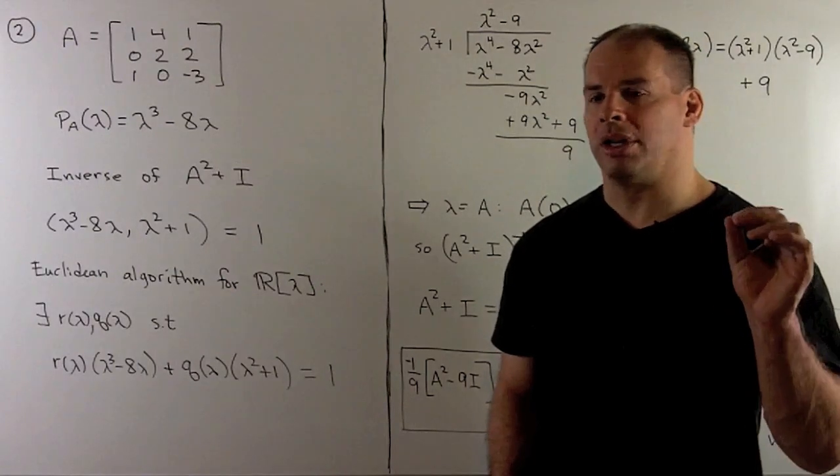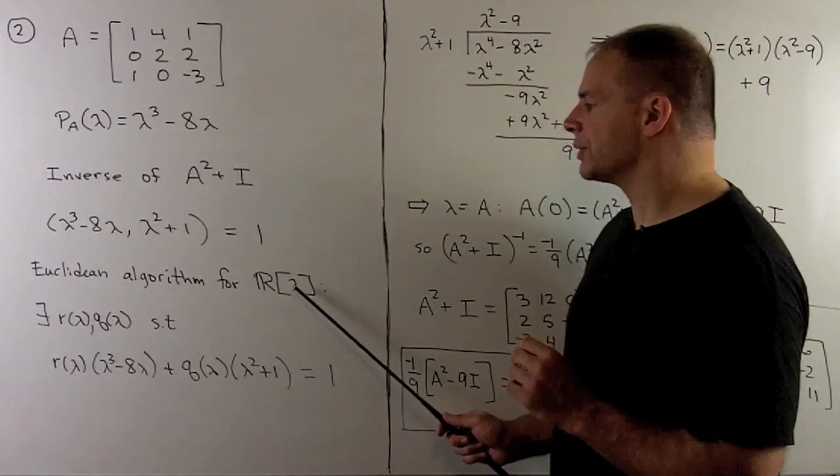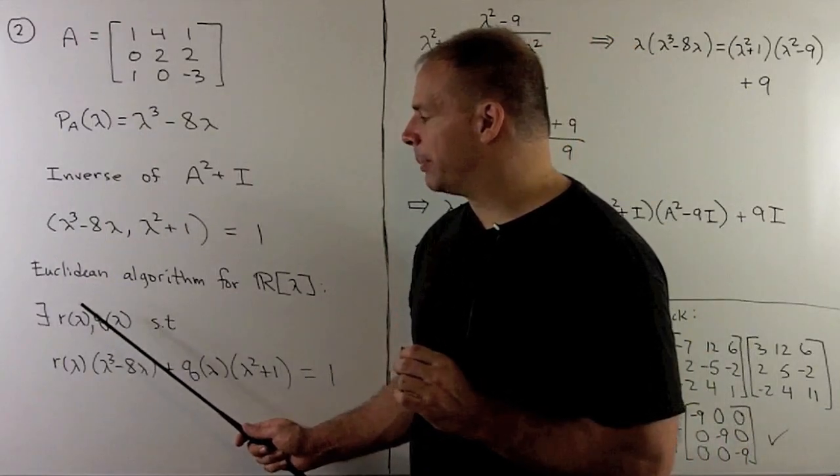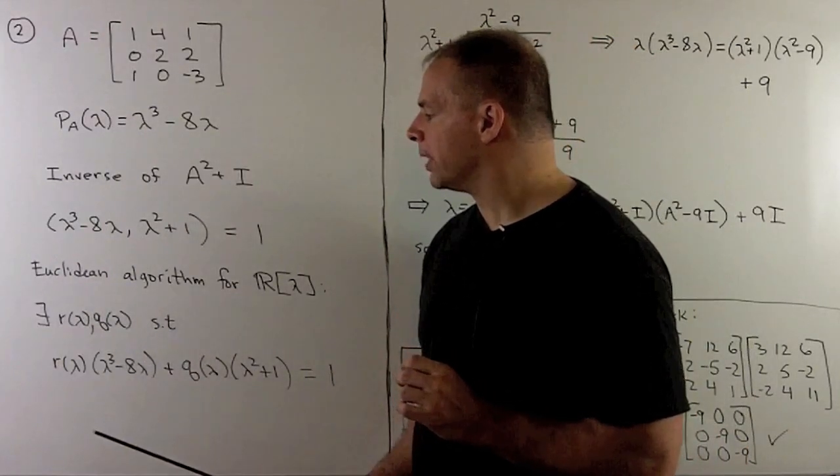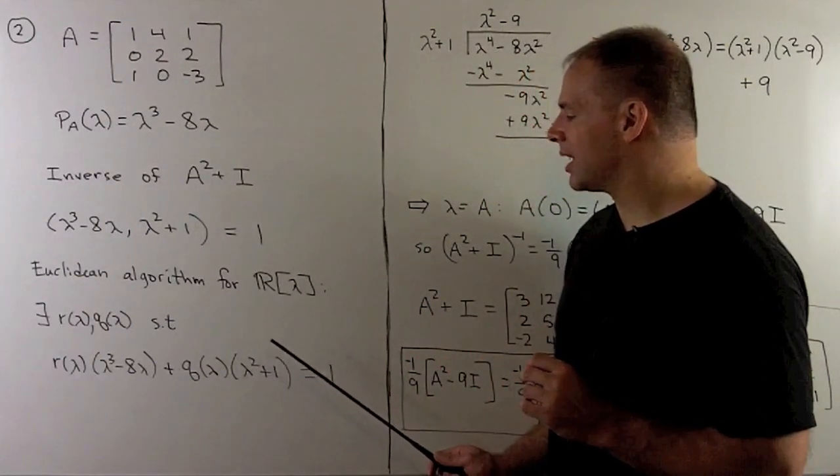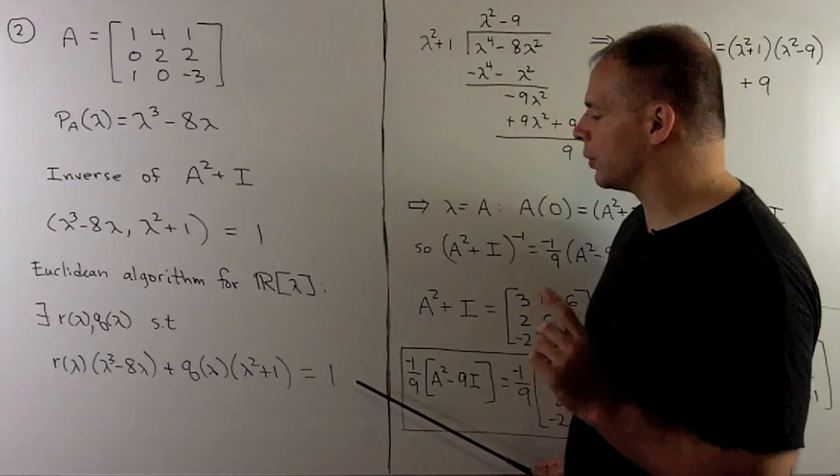We can invoke Euclidean algorithm for polynomials. So, from that we have, there will be polynomials R and Q, such that R times lambda cubed minus 8 lambda, plus Q times lambda squared plus 1 is equal to 1.